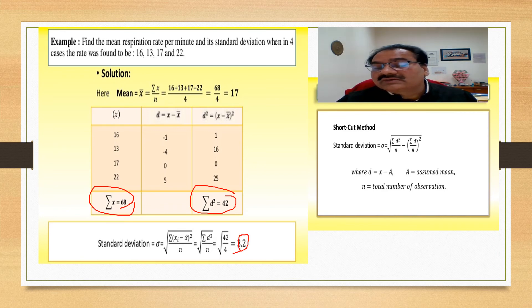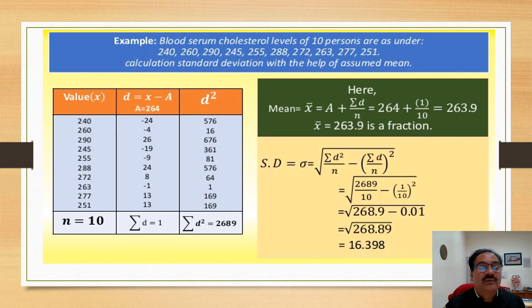Now, the second case when the deviations are taken from assumed mean, then in that case, the shortcut method is: sigma equals summation of d square by n minus summation of d by n whole square. d is x minus a, a is assumed mean and n is total number of observations.